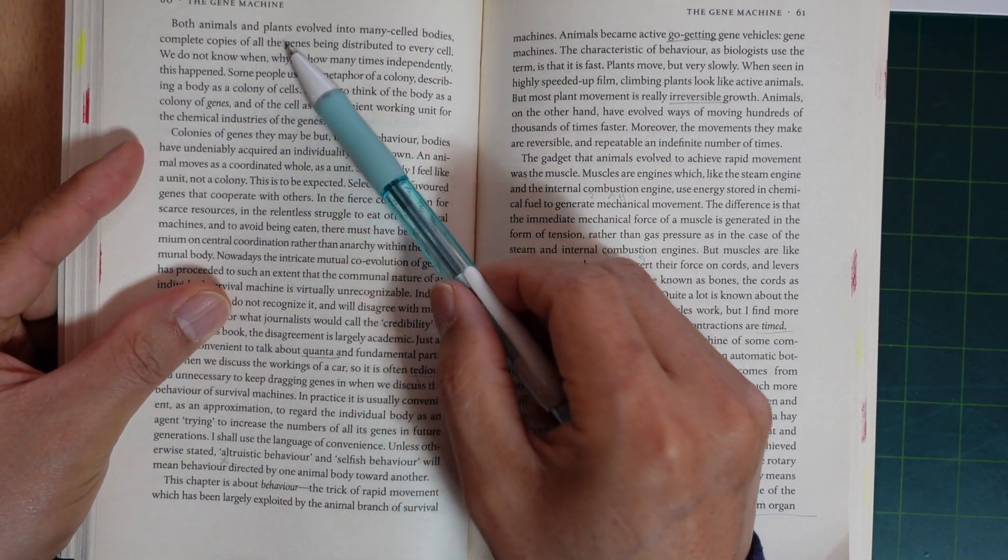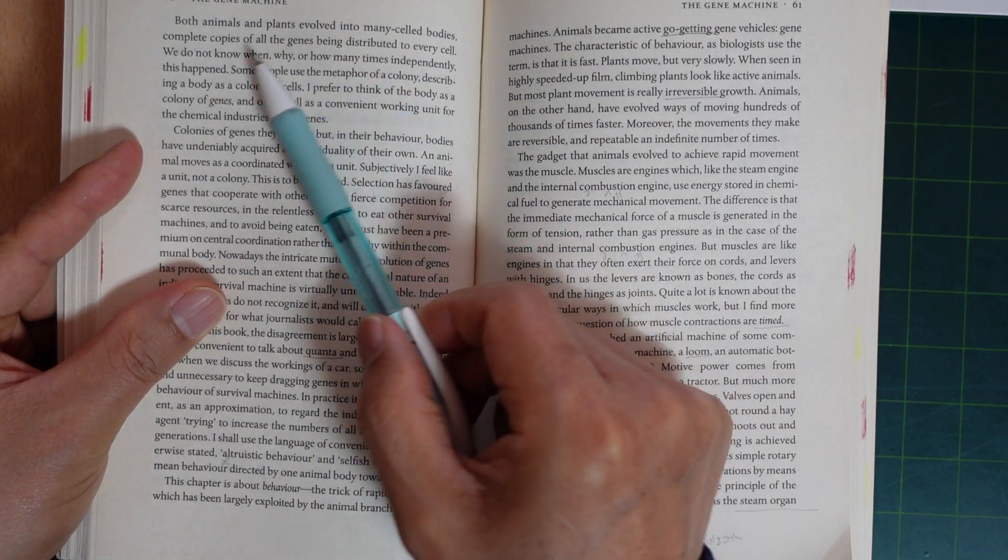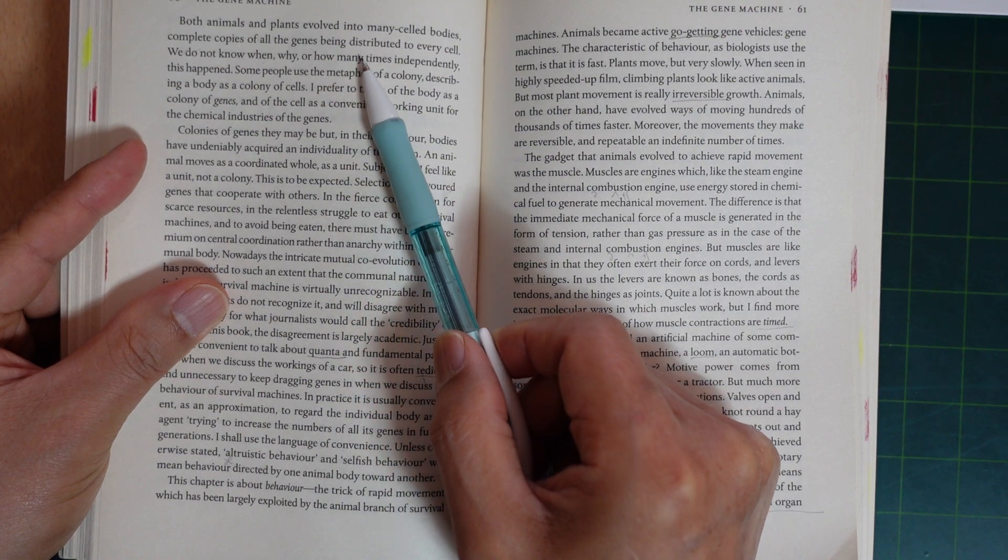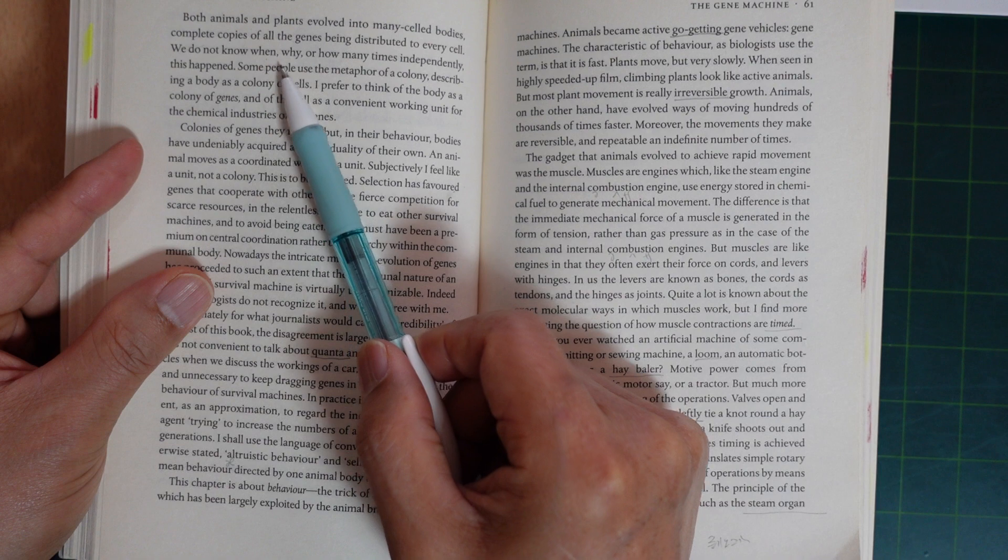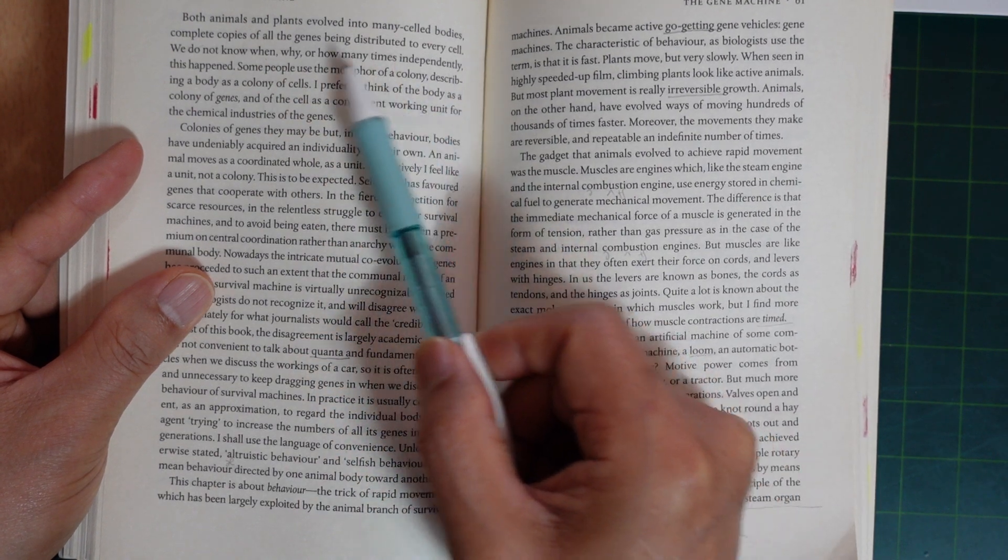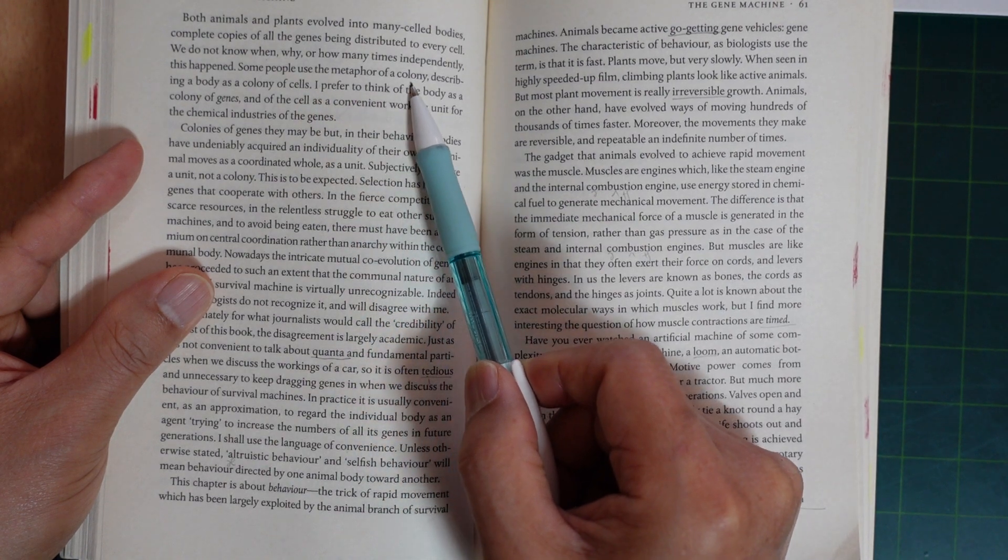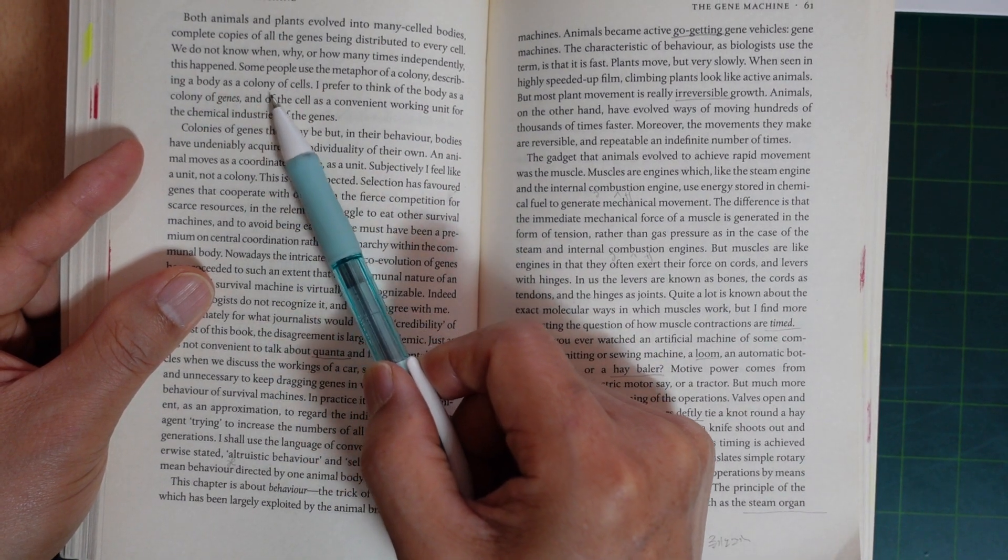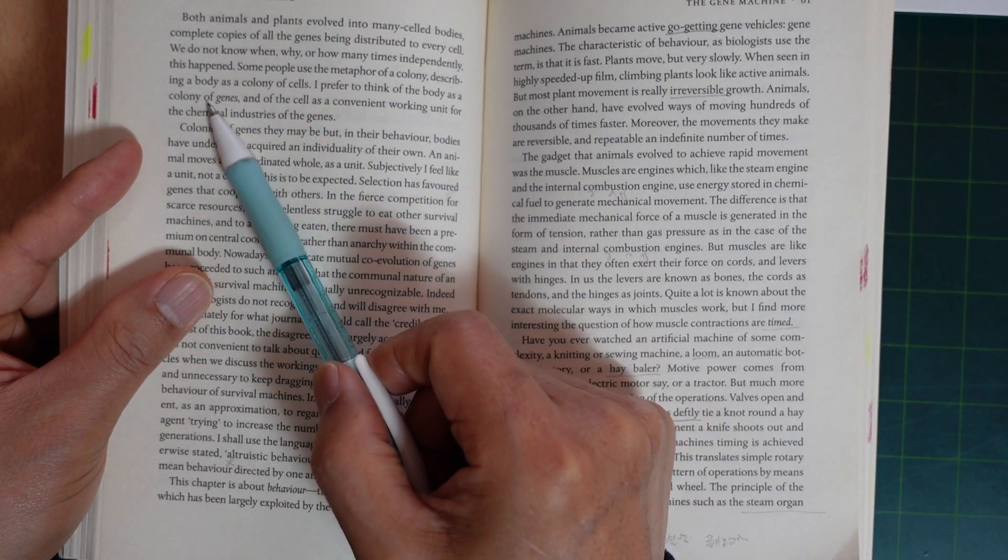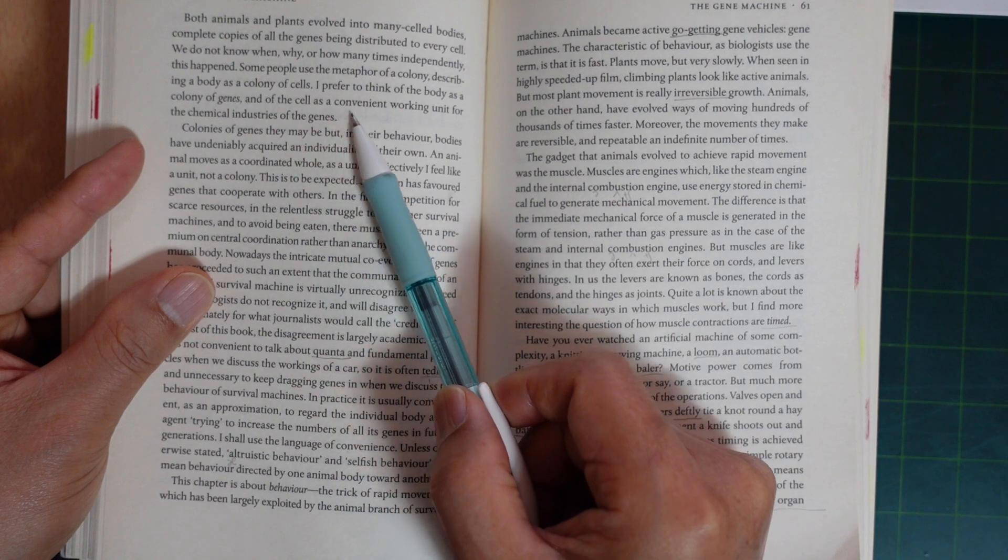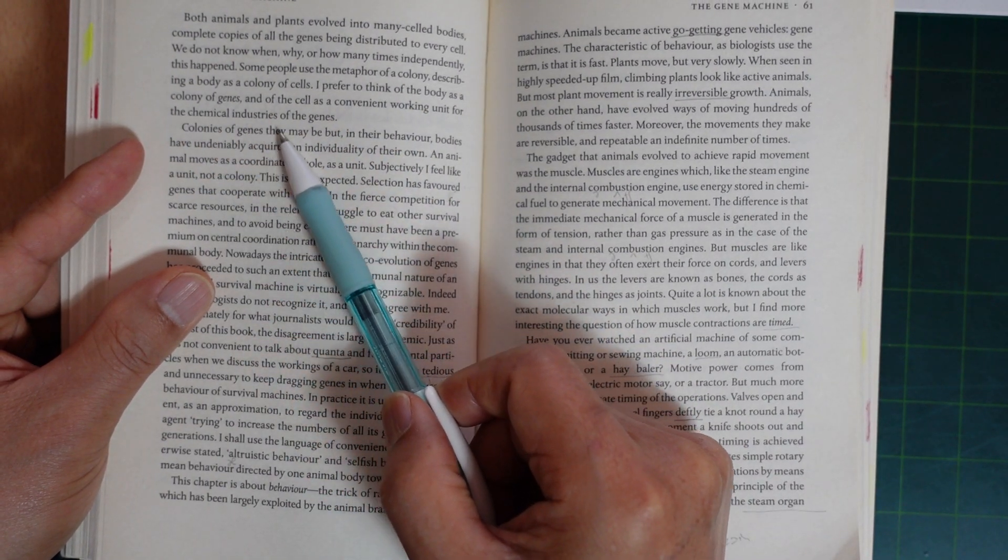Both animals and plants evolved into many-celled bodies, complex copies of all genes being distributed to every cell. We do not know when, why, or how many times independently this happened. Some people use the metaphor of a colony, describing a body as a colony of cells. I prefer to think of the body as a colony of genes, and of the cell as a convenient working unit for the chemical industries of the genes.